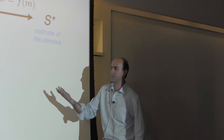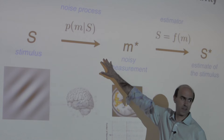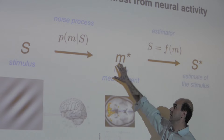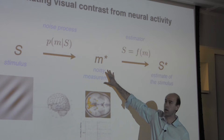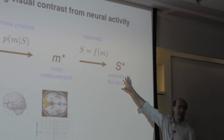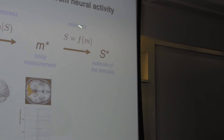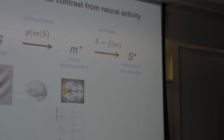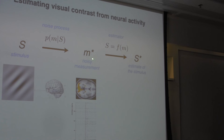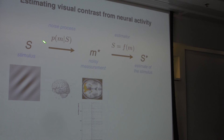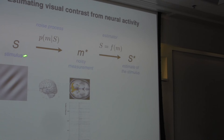There is a stimulus, there is a noise process — because your devices are noisy or the brain is not a perfect machine — you make a noisy measurement. The task that the brain or the experimenter wants to do is to use that noisy measurement to say what the stimulus was: what was the contrast of the stimulus? This is the problem we call inference — you make a measurement and make an inference about the state of the world from the measurement.